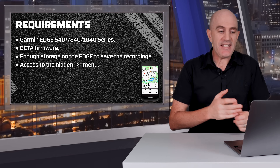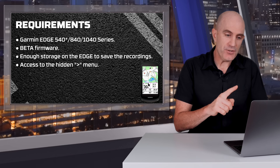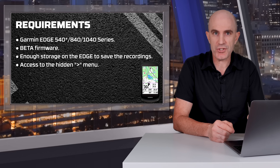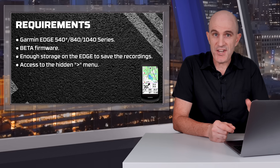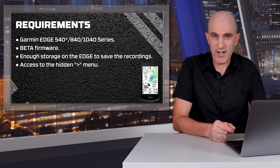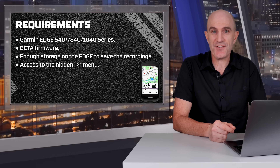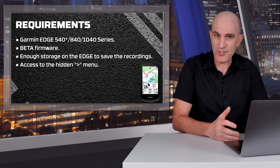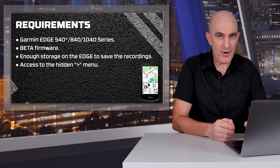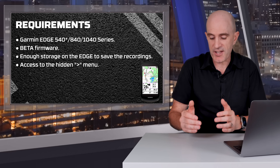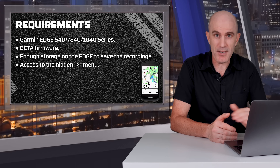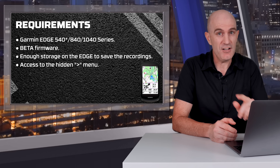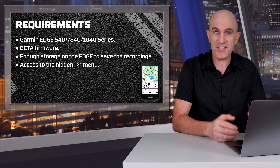Let's get into the requirements and how to get it done. You'll need a Garmin Edge 540, 840, or 1040 series. I haven't tested the 540, and I do believe this may also work with the Edge Explore 2, which I'd consider an X40 series unit. The next requirement is that you need to be on beta firmware for this option to be visible — this function isn't feature-flagged on production firmware. It only appears as an option in beta firmware, so if you're doing the latest updates on the public stream via Garmin Express or directly from the head unit, this is probably not going to show up. You also need enough storage space on the unit to save all these files.